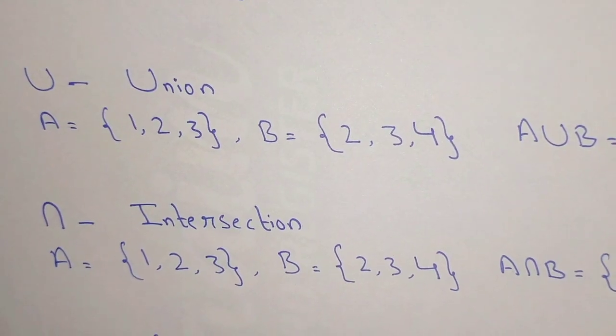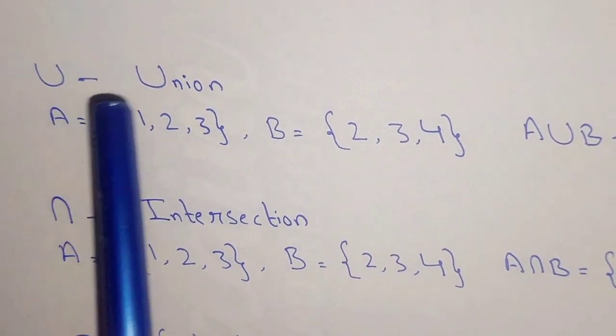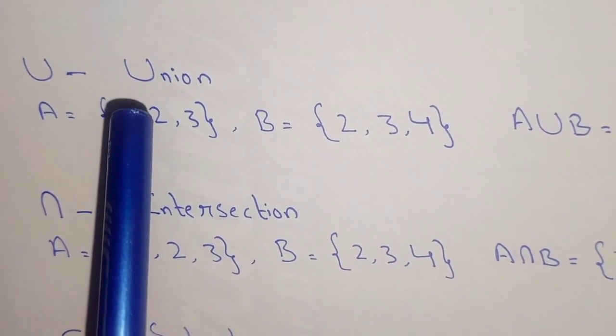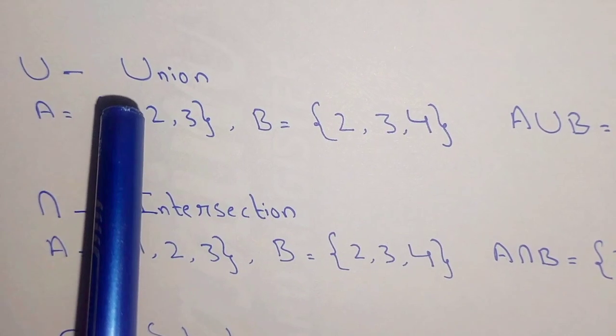Another notation is ∪, which denotes union. It means combining the elements of two or more sets.